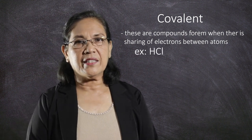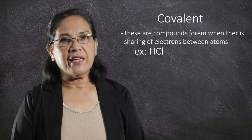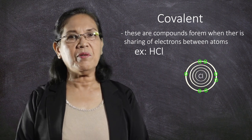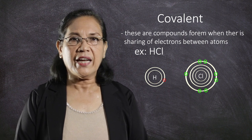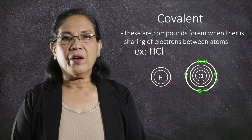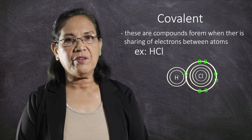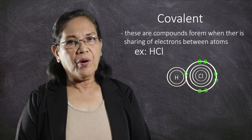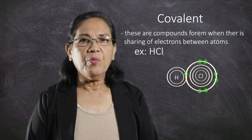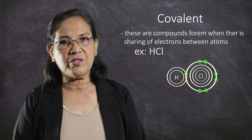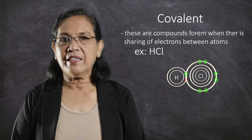Another example is hydrochloric acid, HCl. In hydrochloric acid, there are seven electrons in the outermost energy level of chlorine, while hydrogen has only one electron. This one electron of hydrogen will share with one of the electrons of chlorine in the outermost energy level in order to form the hydrochloric acid. Most of the non-metallic compounds are covalently bonded. More of the nomenclature of these compounds will be learned in the next chapter.